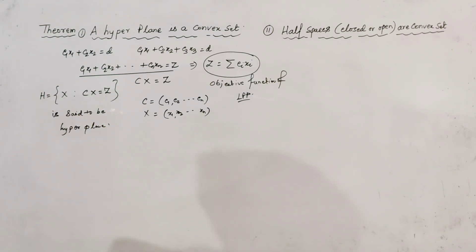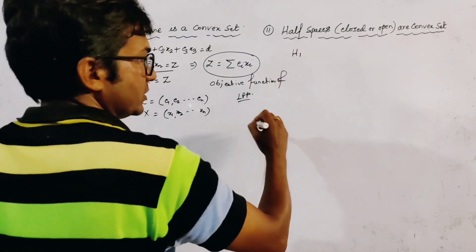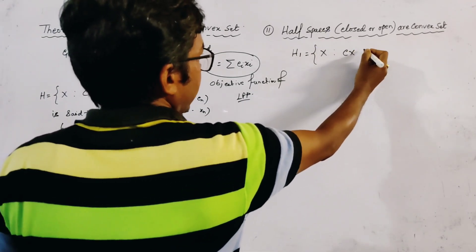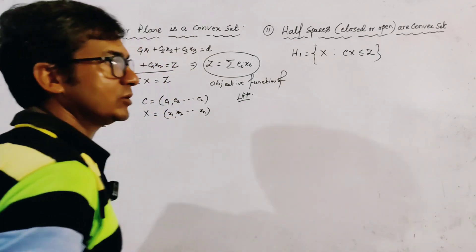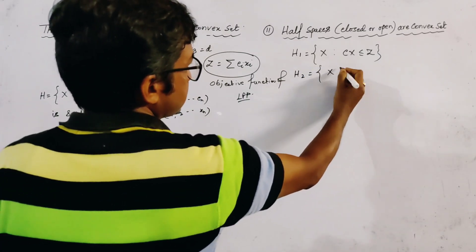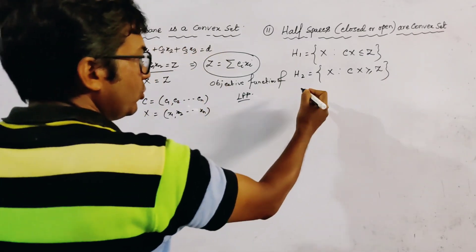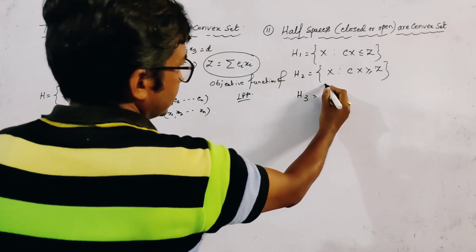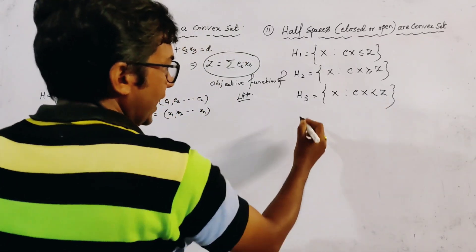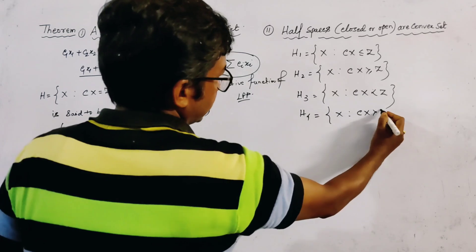To define half spaces, if we consider the set H1 = {x | cx ≤ z}, and H2 = {x | cx ≥ z}, and if we define H3 = {x | cx < z}, and H4 = {x | cx > z}, these four sets define the half spaces.